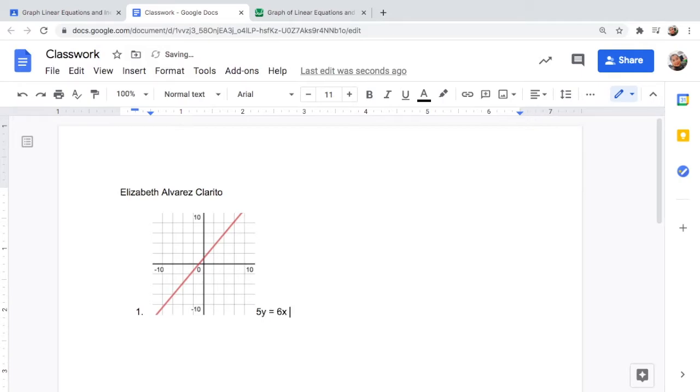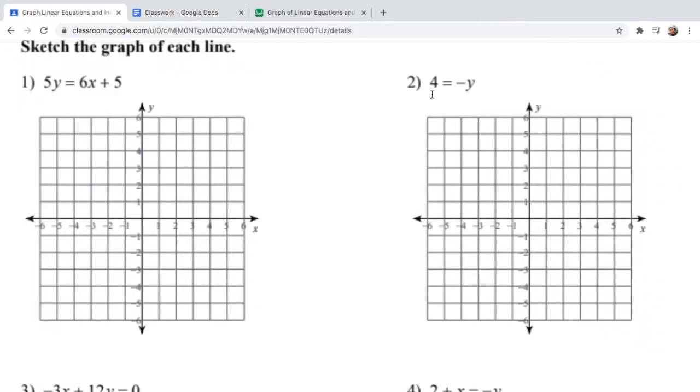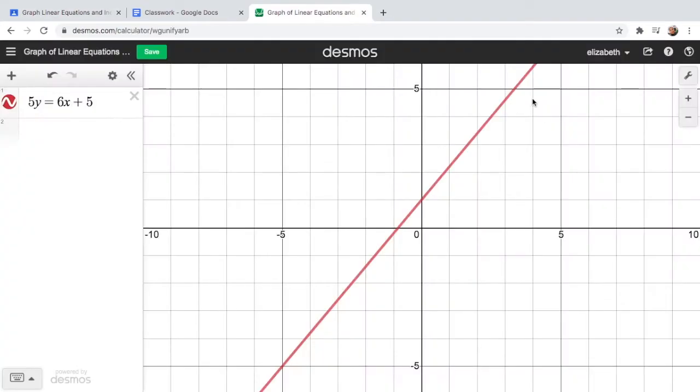And there you go, this is actually the graph of 5y = 6x + 5. Next, let us try the second problem, which is 4 = -y. You can delete this or keep it. So this will be -y = 4. There you go.